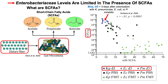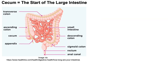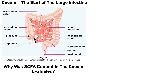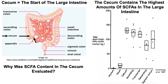As a metric of how much enterobacteria were found in the mice after colonization, they looked at CFU — colony-forming units per gram — and measured levels of short-chain fatty acids in the cecum. The cecum is the beginning of the large intestine where the small intestine ends, and it contains the highest amounts of short-chain fatty acids in the large intestine.